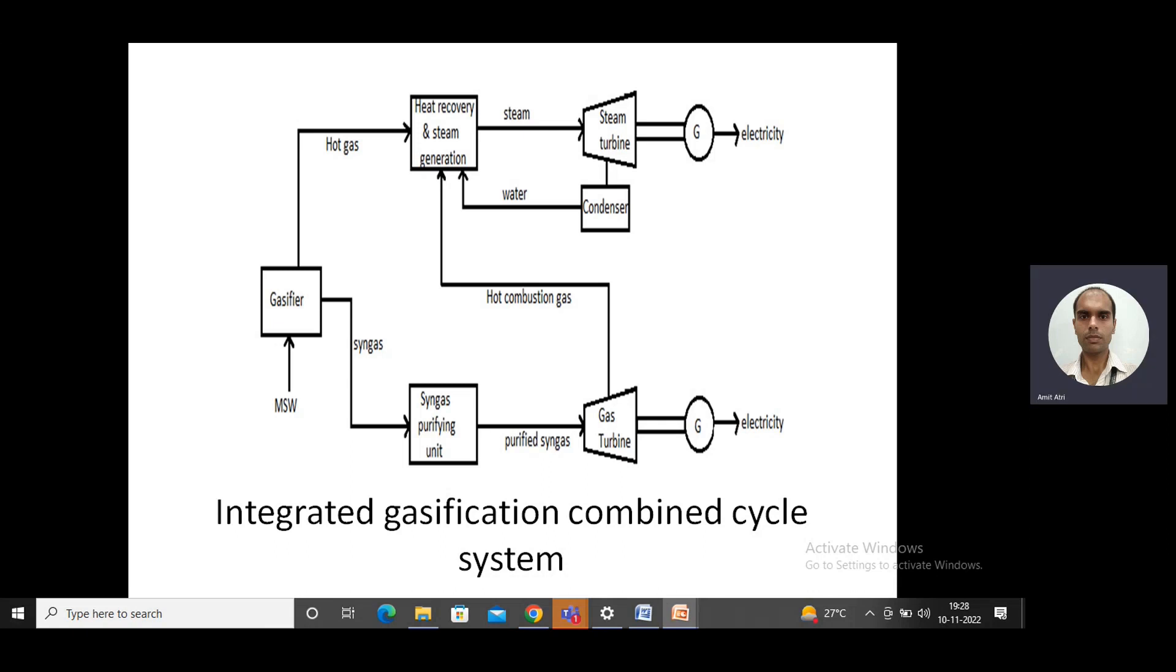For the condenser, the exhaust from the steam turbine is condensed in the condenser and the water pump circulates it back to the heat recovery system. Basically it is functioning like a boiler where the steam is produced.